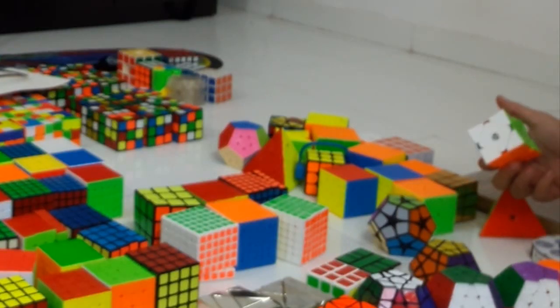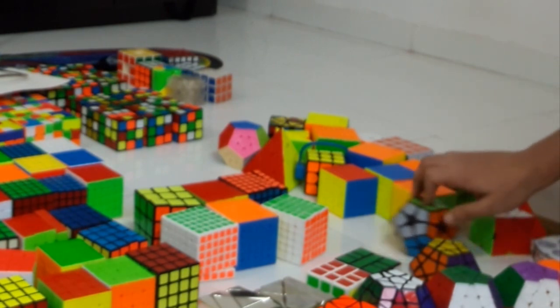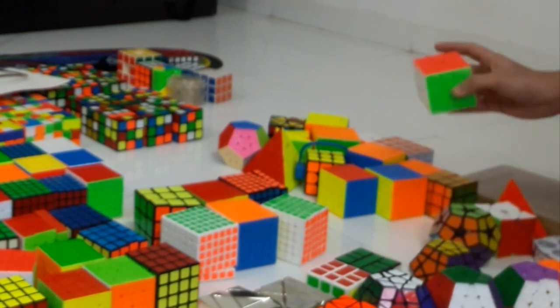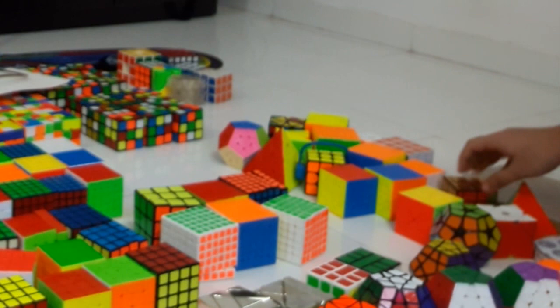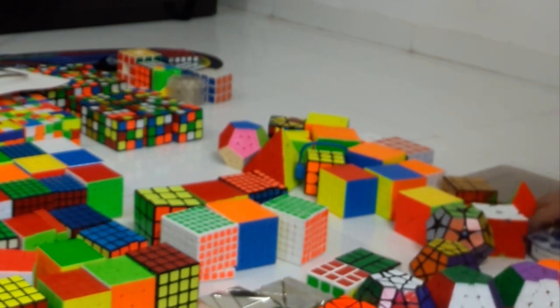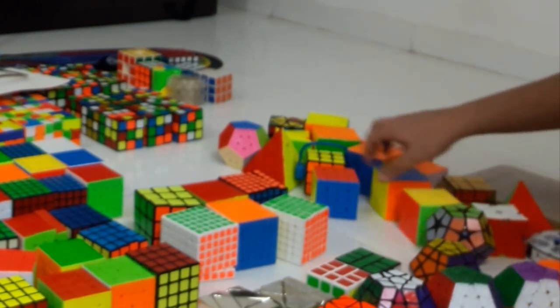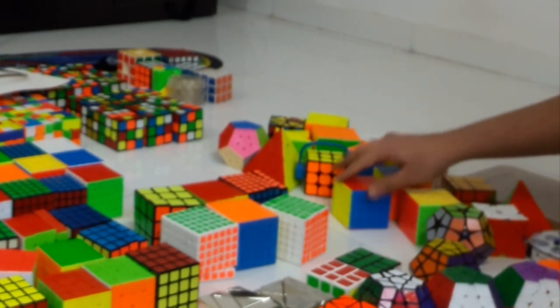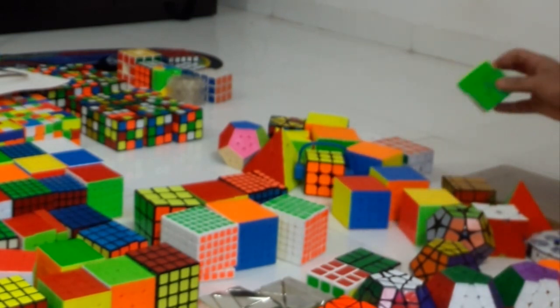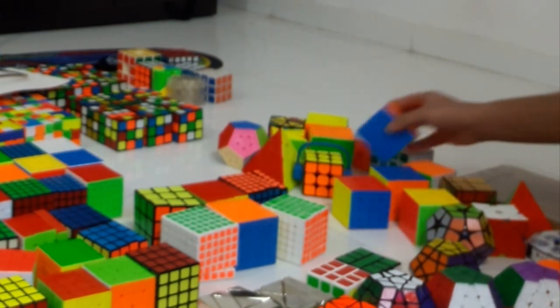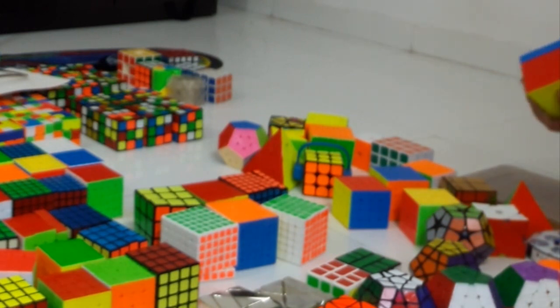This is the YongJun Skewb, Kilominx, this is the MoYu Redi Minx, mirror cube, Cubelelo Elite Clock, Weilong 5 cube, MoYu WRM 4x4, the YuXin Little Magic Square-1.